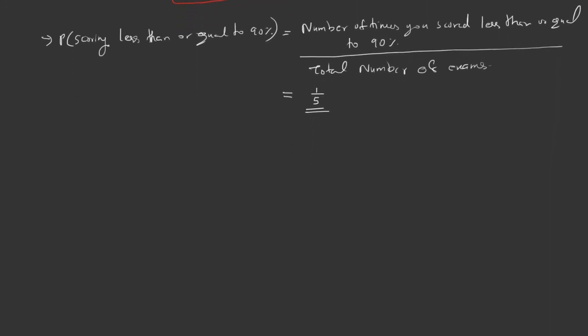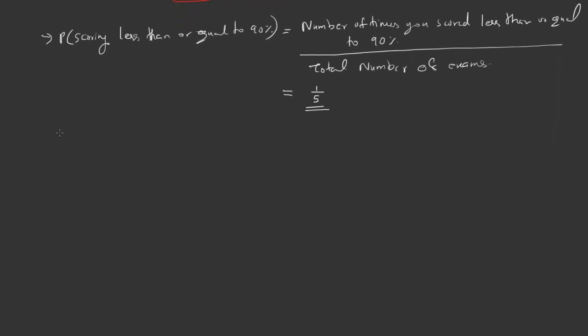We already calculated the probability of scoring more than 90 percent as 4/5. Let us add these two: 1/5 plus 4/5 equals one.